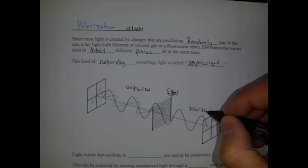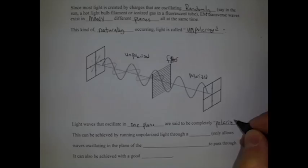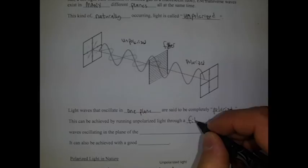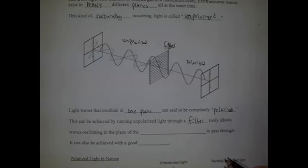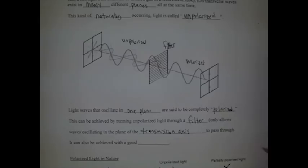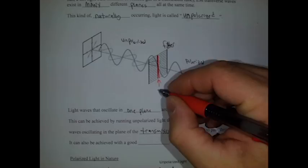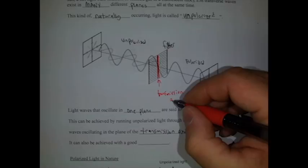If we have light waves that oscillate in one plane, they are said to be completely polarized. Polarized light. This could be achieved by running unpolarized light through a filter, which only allows waves oscillating in one plane, or the plane of something called the transmission axis. And you don't necessarily need to know that term for the test or anything, but the transmission axis is part of the filter, what the filter allows through. And so this particular filter seems to have a transmission axis that would look like this. I know it's the opposite of those lines there, but this would be its transmission axis. Transmission axis. It's only allowing oscillations in that direction to pass through.